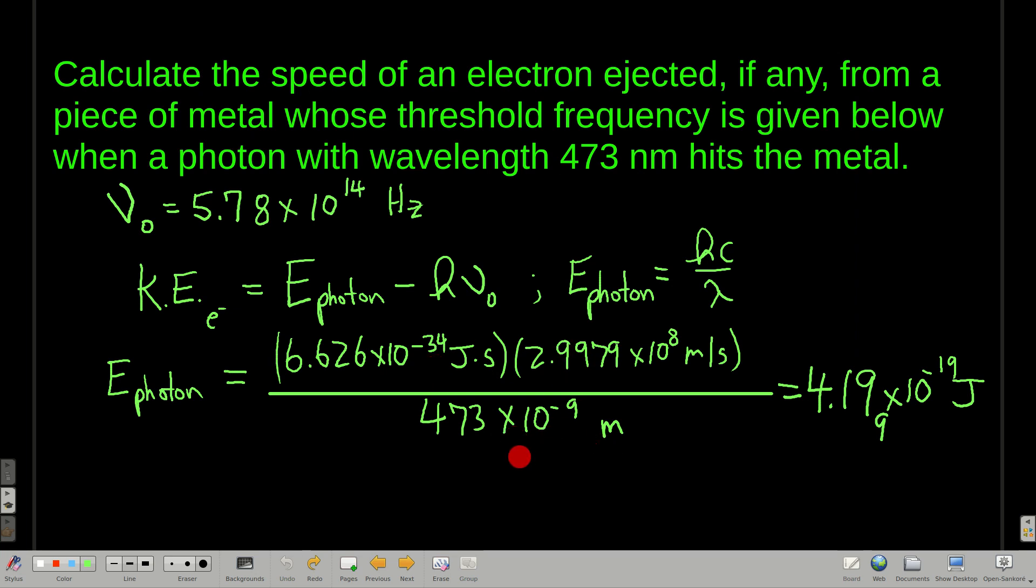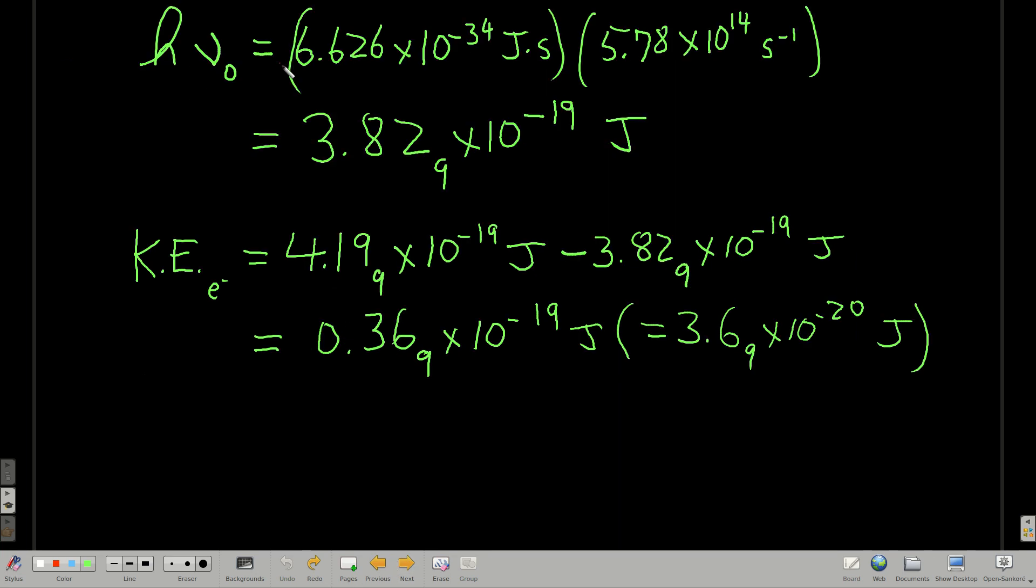Plug all your numbers in, check my work, make sure you guys get the same number, really do that. And we get 4.199 times 10 to the minus 19th joules. Seconds cancel, meters cancel, left with joules. So that's the energy of the photon. We still need the work function, we're going to get the kinetic energy. So the threshold frequency, we said it was 5.78 times 10 to the 14th hertz or per second. That's Planck's constant. So plugging in here, we get the work function, 3.829 times 10 to the minus 19th joules.